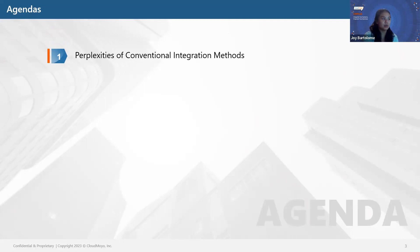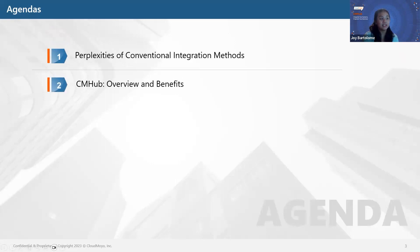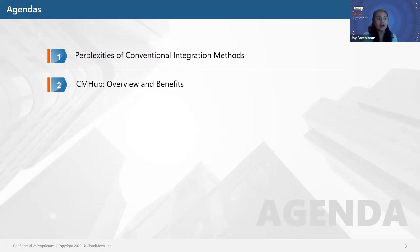Here's the agenda we'll be going over. First, we'll cover the complexity involved in traditional methods of application integration that leads to long timelines, extensive resource allocation, and limited adaptability to the dynamic needs of the business. Second, how CM Hub revolutionizes application integrations by providing a seamless and agile approach, eliminating the need for extensive coding and complex configurations, enabling rapid deployment, cost reduction, and operational efficiency. Third, we'll explore a real-world success story of how CM Hub helped integrate separate systems at a leading North American Class 1 railroad company.